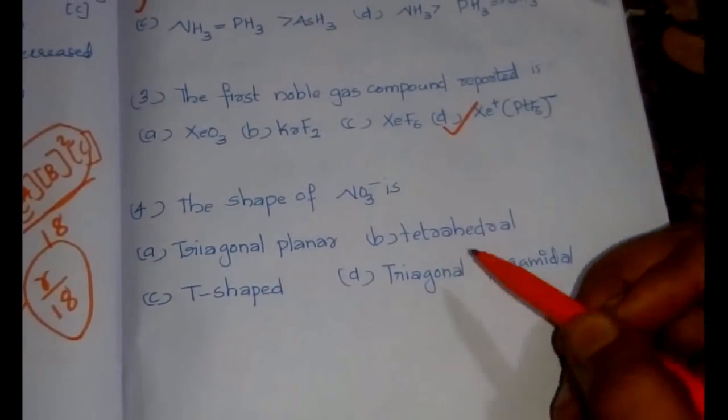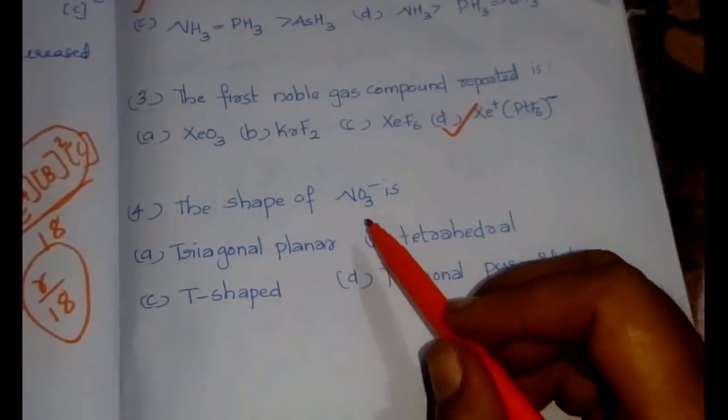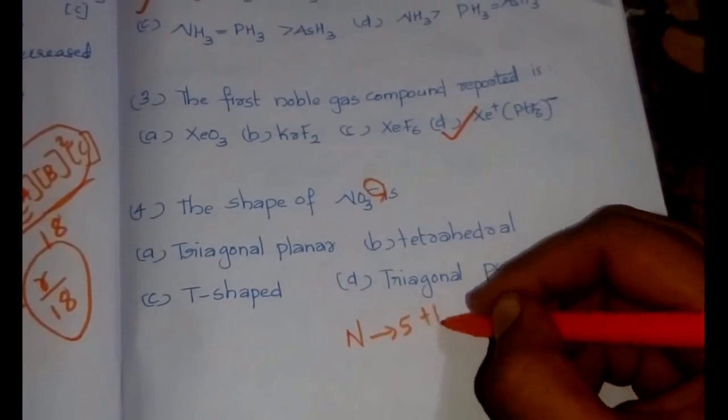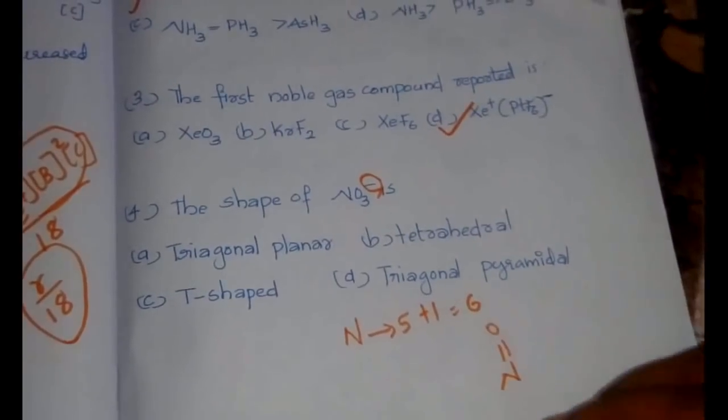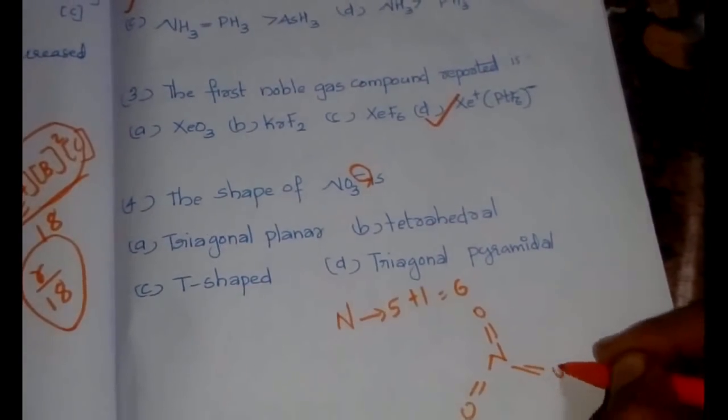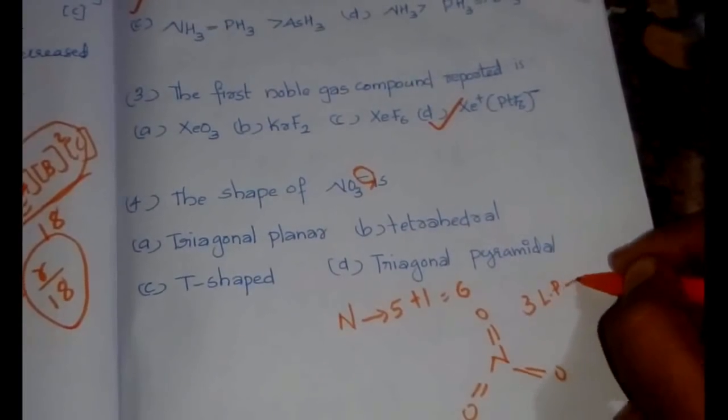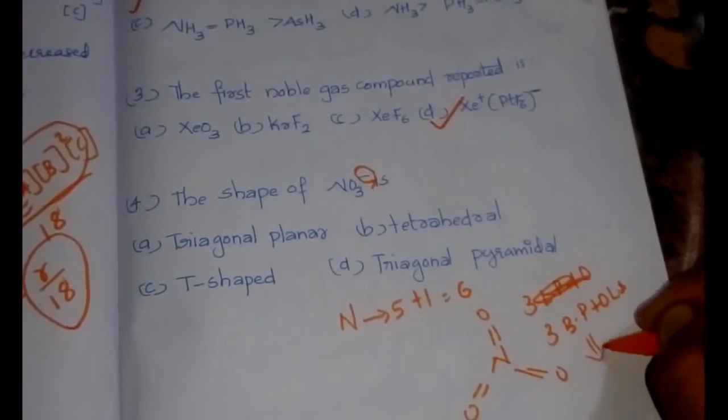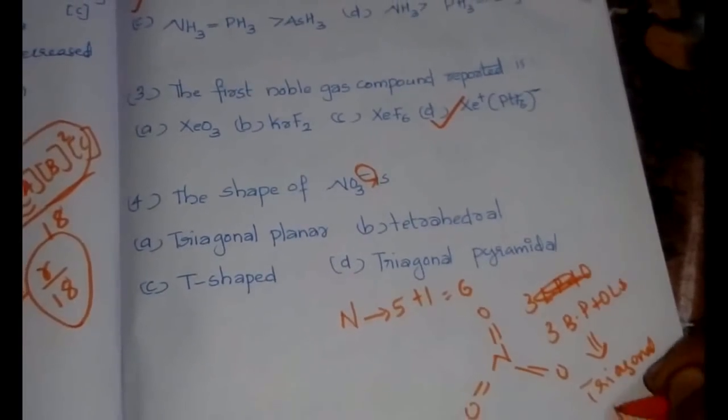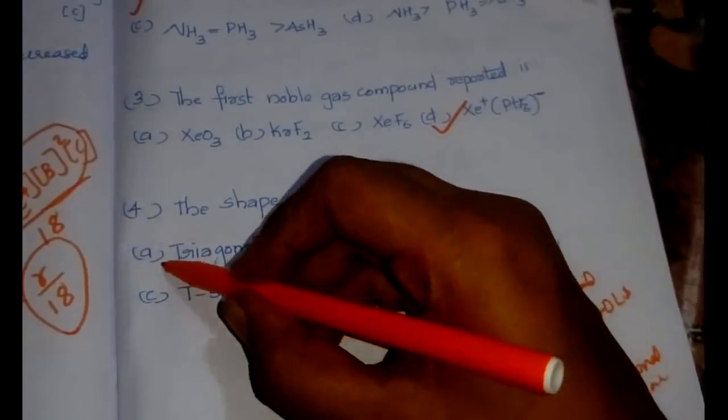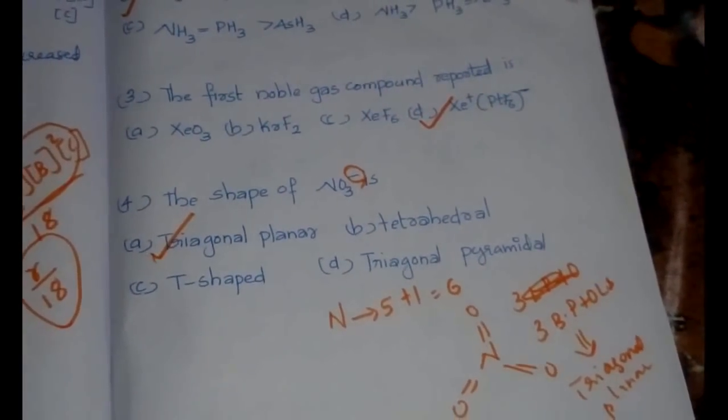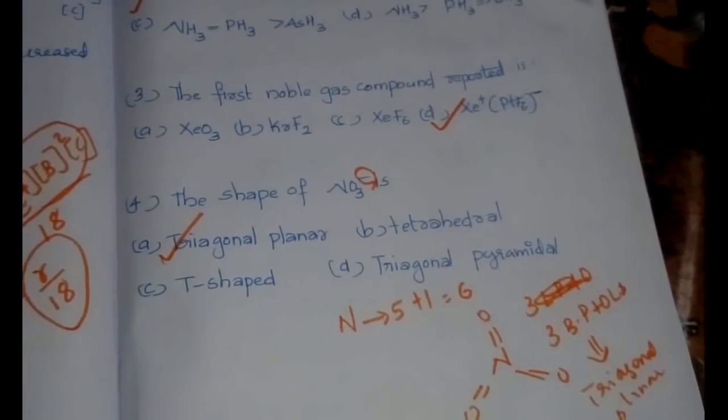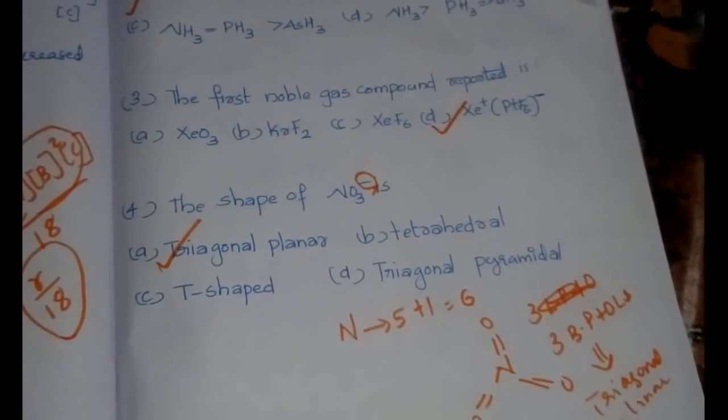Now the shape of NO₃⁻. I have already given the method to find the shape from the number of electrons. Nitrogen is having five electrons in total, and here we have a negative charge, so plus one, we will be having six electrons, giving two to each oxygen.